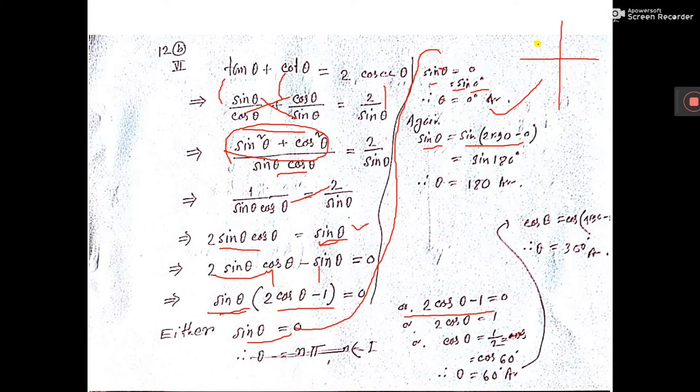Why? Because all sin, second quadrant sin positive. How to go to second quadrant? 1 into 90, 2 into 90 minus theta. So here 2 into 90 minus 0 I have written.